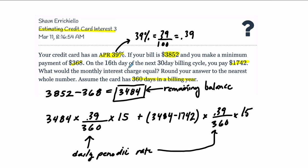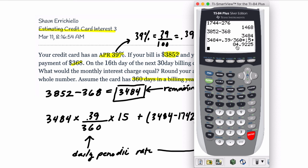All right. So here they say on the 16th day of the next 30-day billing cycle, you pay this. What would the monthly interest charge equal? We found that. Round your answer to the nearest whole number. We did that. We assumed that the card has 360 days in the billing year. So it would be $85.